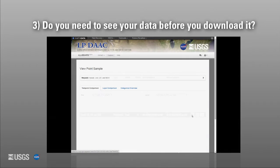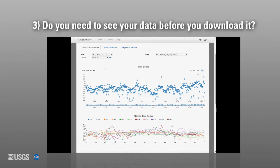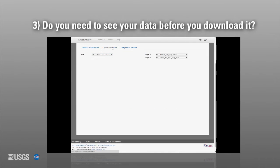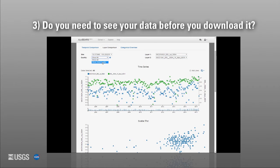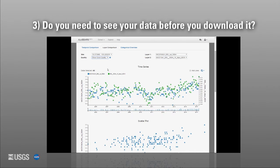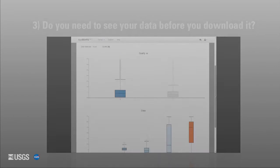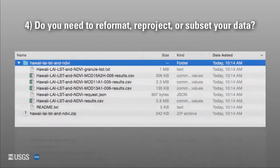Do you need to see your data before you download it? You can explore the pixel values of your input point locations within the APPEARS application before you download the data. Using APPEARS, you can compare the data values for the various layers that you have chosen. You can also view and filter data based on quality information.